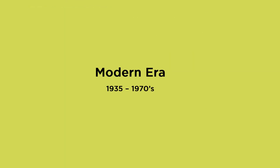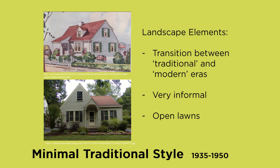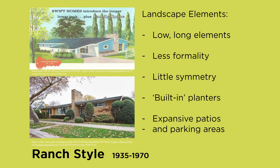Finally, I touched on a few within the modern era, as we see a few modern era homes in the Heights. The minimal traditional style was the transitional style between the more traditional and the more modern — very informal, with open lawns very common, since by this time caring for an open lawn was very easy. Then the ranch style, which is extremely informal, uses long, low lines in both the architecture and the landscape, very little symmetry. It's common to have built-in planters incorporated into the home. Due to the rise of the automobile, large expansive parking areas and patio areas are very common.